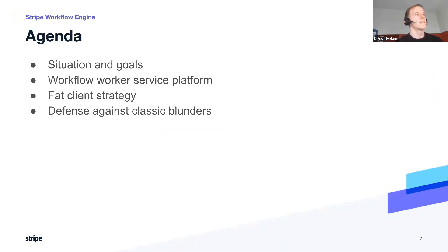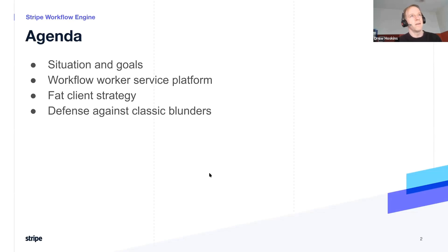I'll give you some context and talk about how teams divide up service ownership for the worker services we're building on Temporal. I'll talk about our fat client strategy and then some of the protections we've given our diverse user base against foot guns.